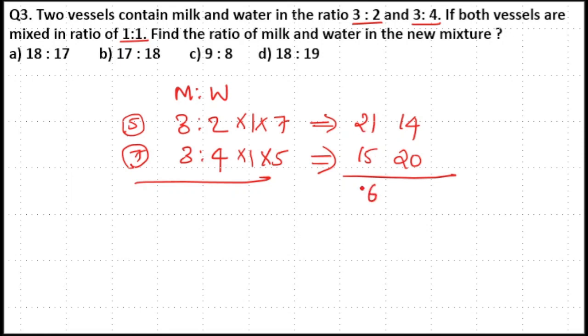21+15=36, 14+20=34. So 36:34, cancels it with 2, 18:17.